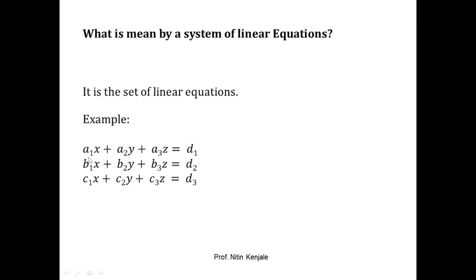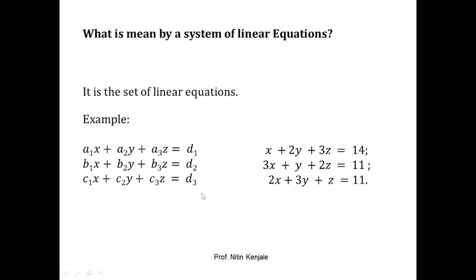Since every term's degree is not the same, it is called a non-homogeneous linear equation. Look at the first equation: the degree of the first three terms is one, whereas the degree of the fourth term on the RHS side is zero. That is why it is non-homogeneous. Since the nature of all the equations is non-homogeneous, together they form a system of non-homogeneous linear equations in variables x, y, and z.